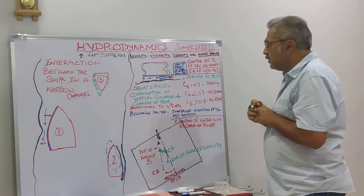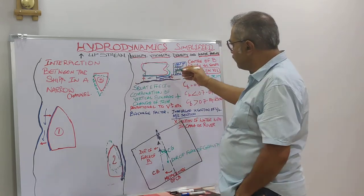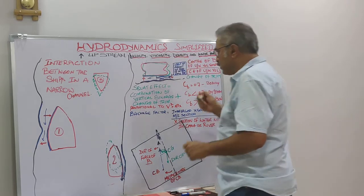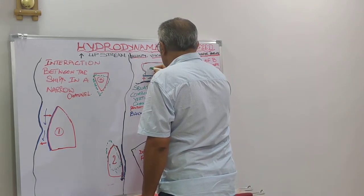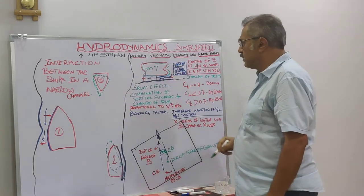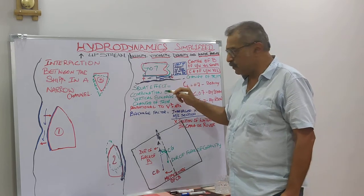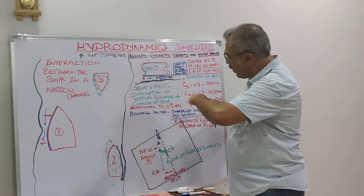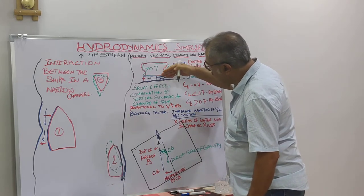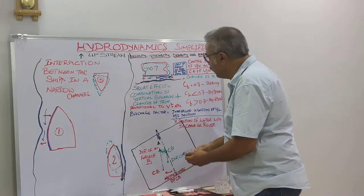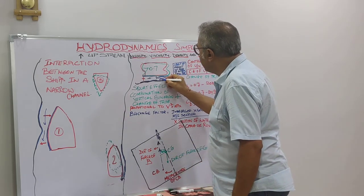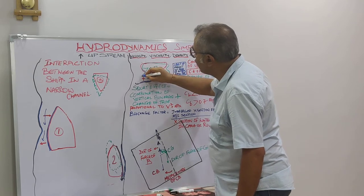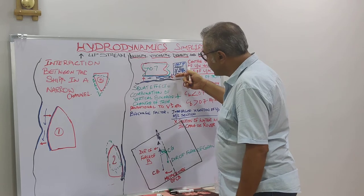Let me talk about the effect of squat. This vessel has a block coefficient of more than 0.7, because of which she will be squatting by head. The water is passing from the bow because there is a constriction - think of this as a pipe. The pipe is getting constricted at one end and opening at the other, so because of this constriction there is a low pressure at the bow.